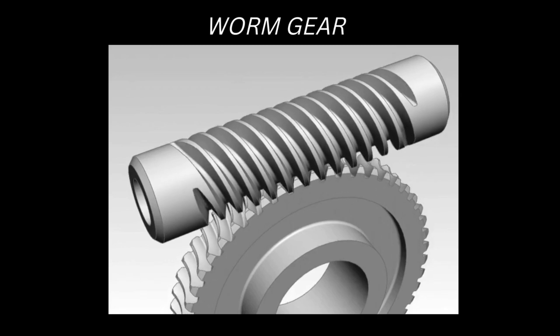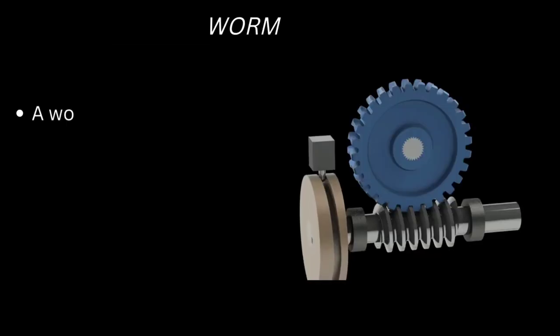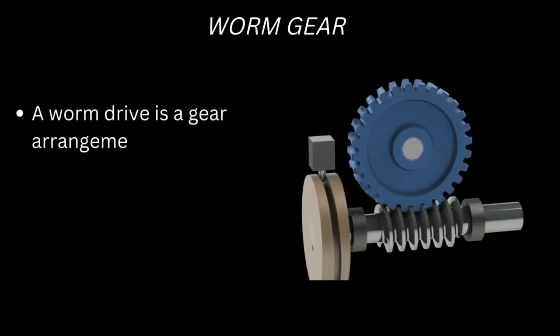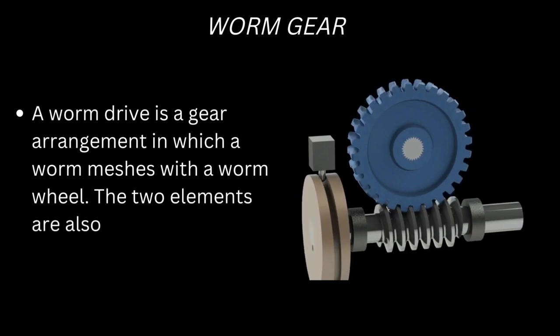A worm drive is a gear arrangement in which a worm meshes with a worm wheel. The two elements are also called the worm screw and worm gear.